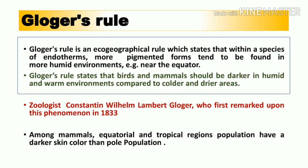Gloger's Rule states that birds and mammals should be darker in humid and warm environments compared to colder and drier areas. Birds and mammals from humid and warm conditions will have a more pigmented appearance, while organisms found in colder areas will have a less pigmented form. Organisms living in drier or warmer conditions will have darker pigmentation, while those near polar areas will have lighter skin.